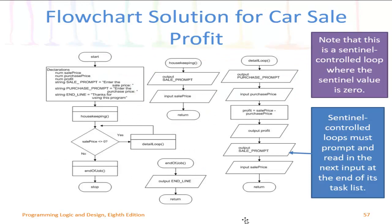Here is a solution for the problem we see on slide 57. The first thing to notice is that we actually have several different flows here. We have the main program flow, housekeeping, detail loop, and then the end of job flow. The main job flow is really where we want to begin. It does use the flowcharting symbols introduced in Chapter 1, and it also introduces a new flowcharting symbol for internal module calls.